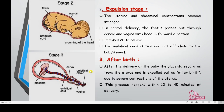The second stage is expulsion. Uterine and abdominal contractions become stronger. In normal delivery, the fetus passes out through the cervix and vagina with the head in the forward direction first — known as crowning of the head. The umbilical cord is then tied and cut close to the baby's navel.